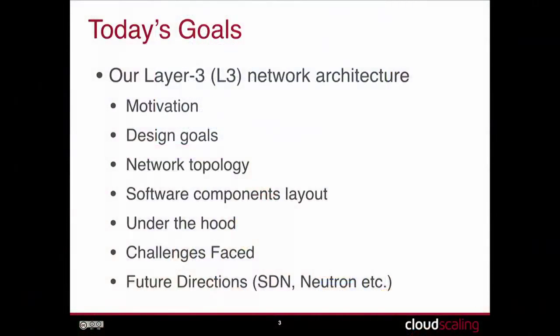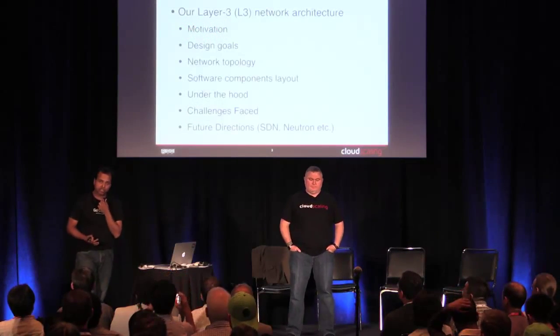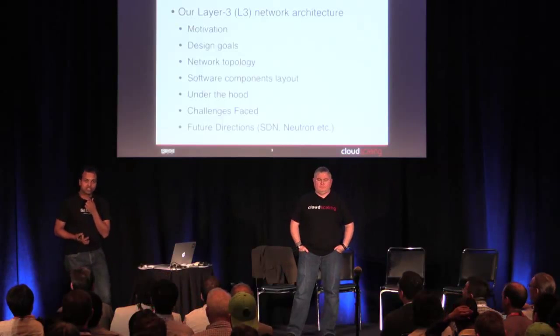We are going to explore our network architecture in detail today. We will start with the motivation and design goals, describe the physical topology in detail, look at the software components that make this happen, and look under the hood at how each component works. We will end with our future directions based on SDN and moving to Neutron. Our networking model is mainly based on Nova Network — we run as a Nova Network plugin.